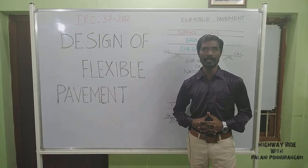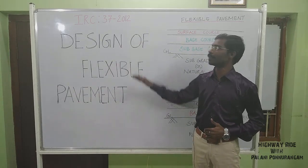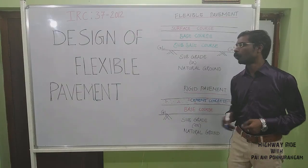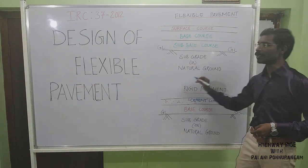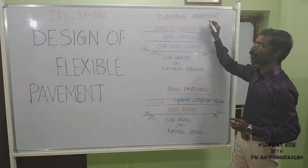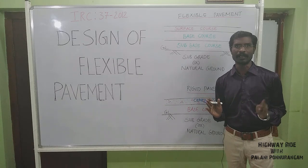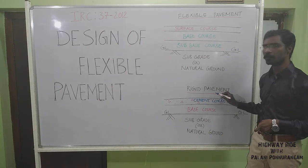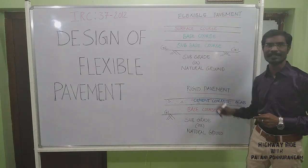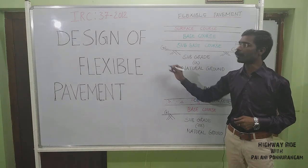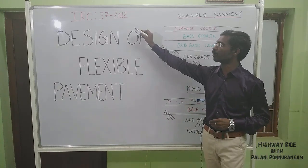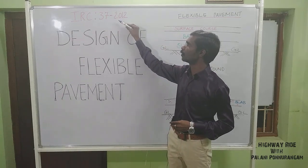Hi viewers. In this video we are going to learn Design of Flexible Pavement as per the Indian Road Congress IRC 37-2012. We already discussed in video 2 what pavement means — it refers to the thickness of various pavement layers. Pavement is classified into two categories: Flexible Pavement, which is a Bitumen or Asphalt Pavement, and Rigid Pavement, which is a Cement Concrete Pavement.